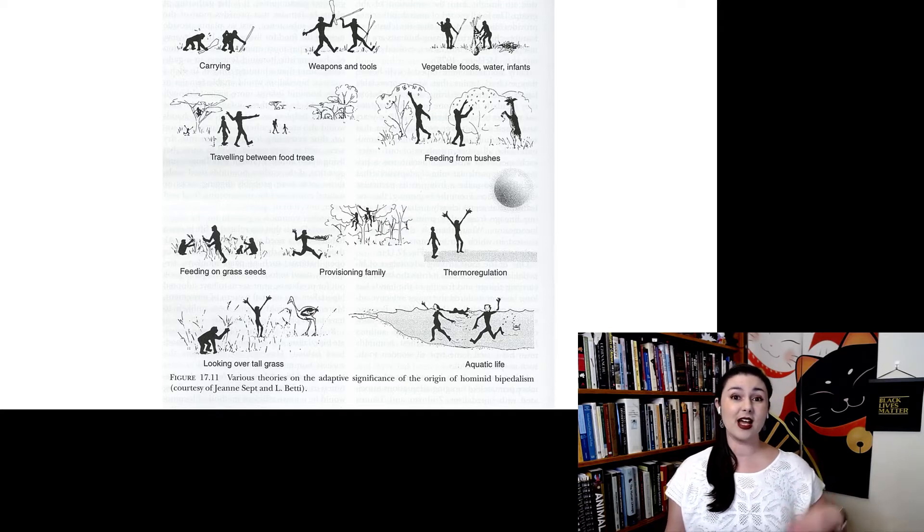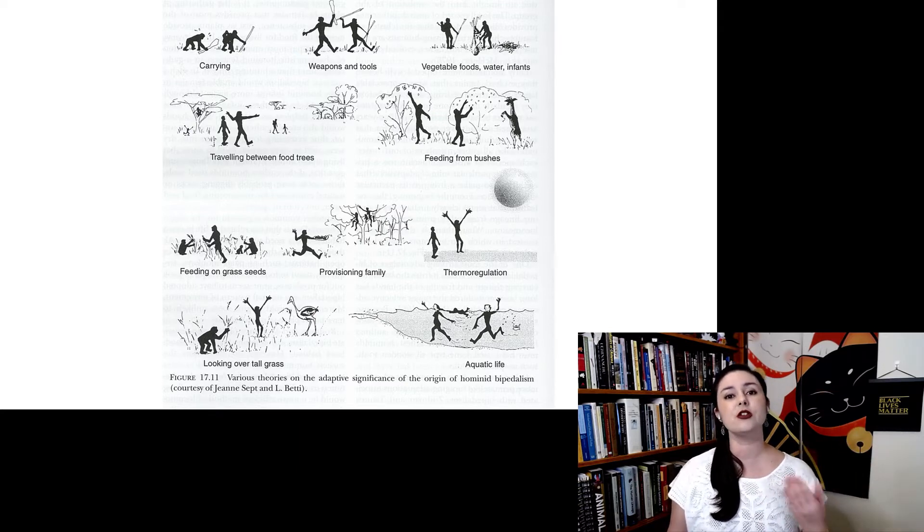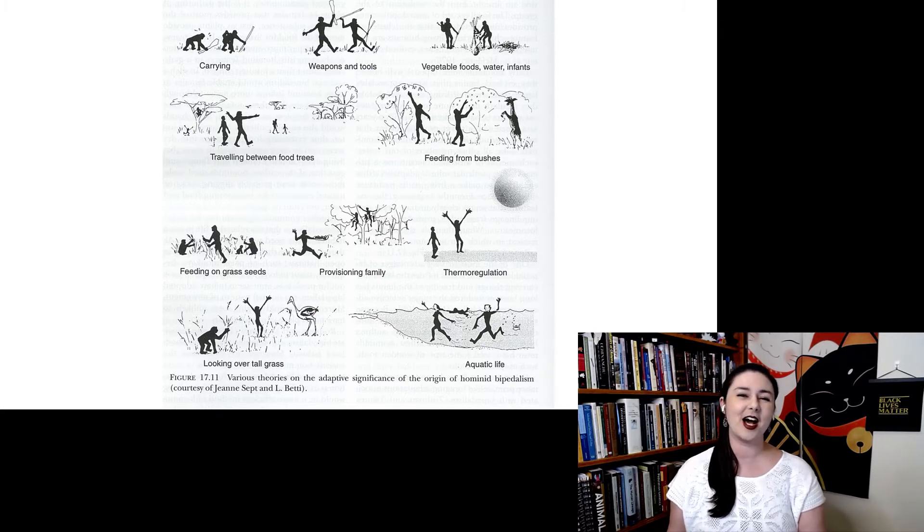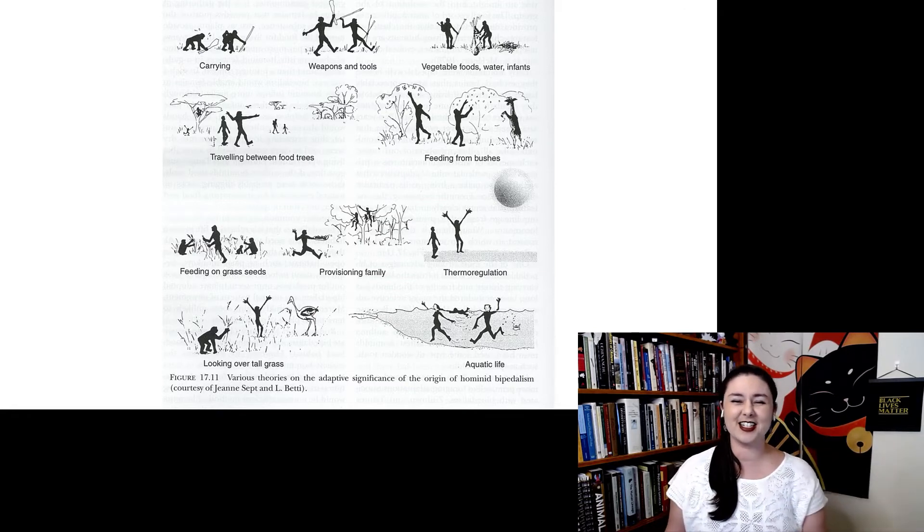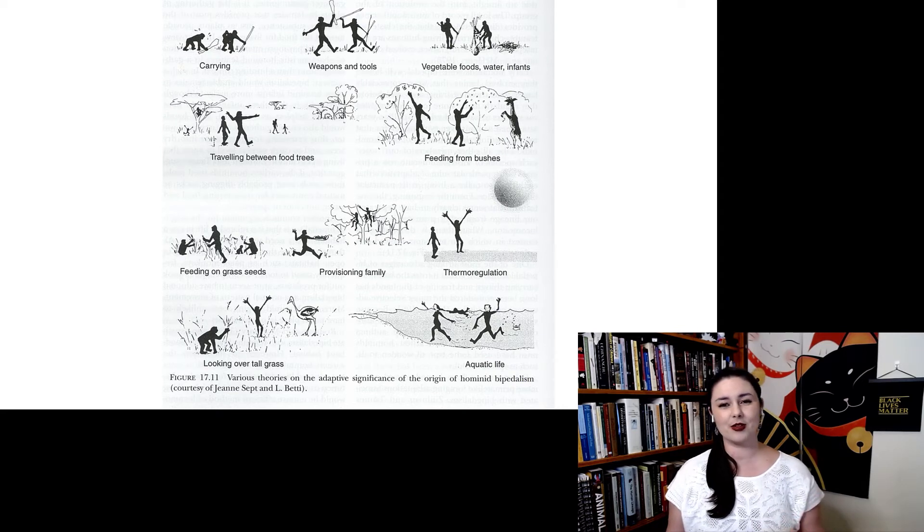It also allows us to be a little bit taller. So it's easier for us to reach food standing from the ground when we are standing up on our legs rather than being on all fours. There are also some benefits to thermoregulation. And we can see a little bit over tall grass. That's one theory. And there's one weird theory that it might be related to aquatic life. But no.